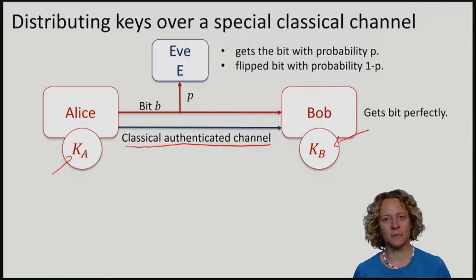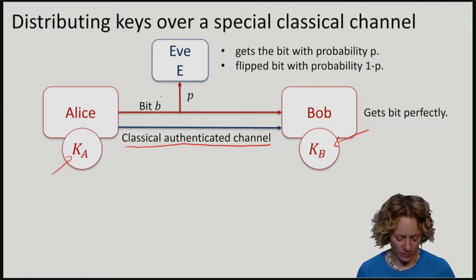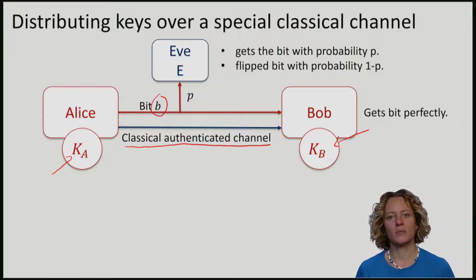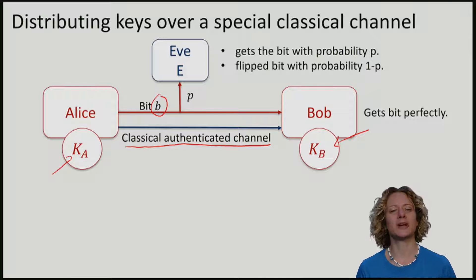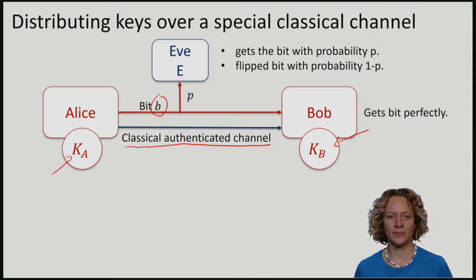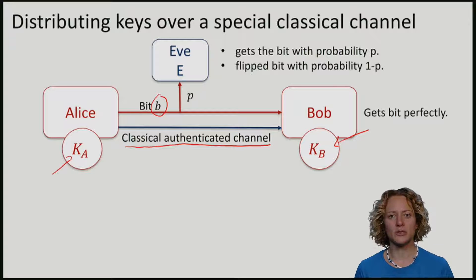This channel has the property that if Alice inputs a bit, Bob gets the bit perfectly. Eve, who is of course very curious, will try and intercept the bit. However, she can only do so with some probability.